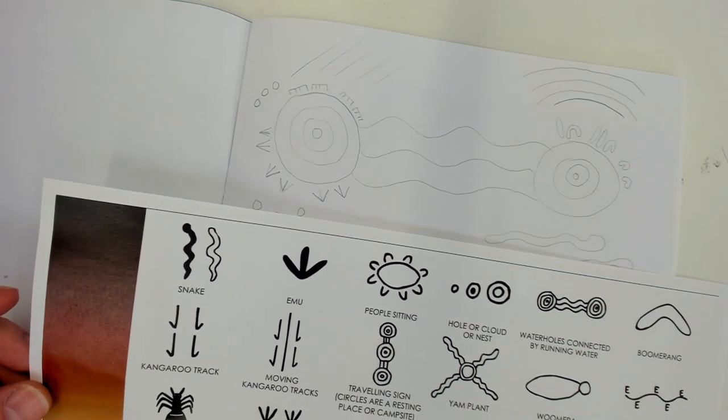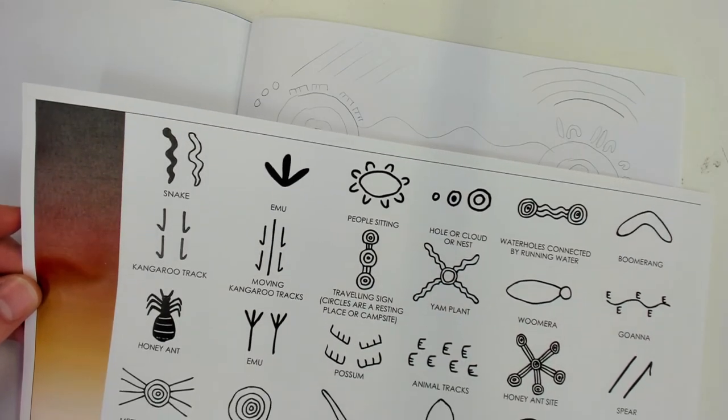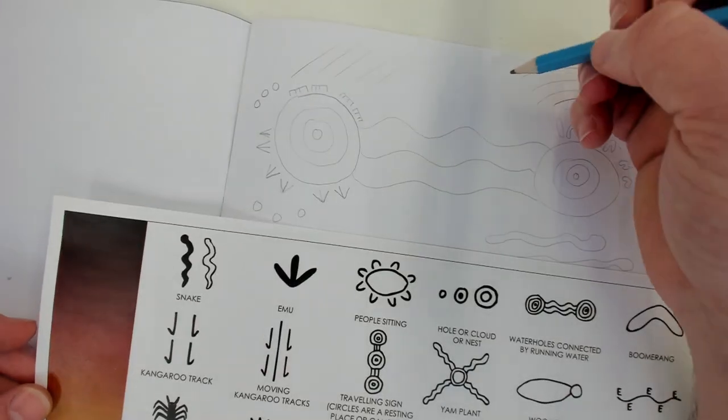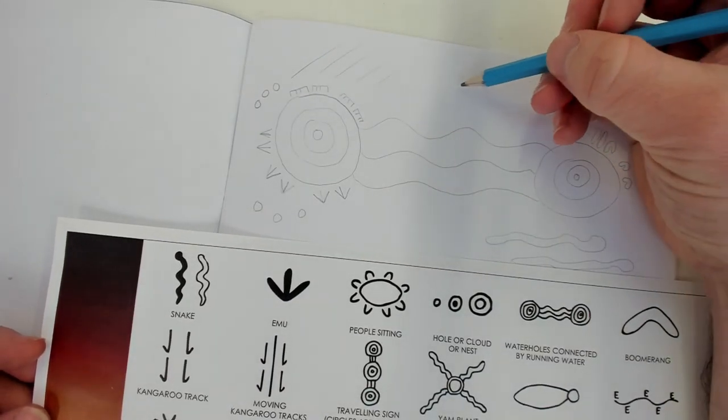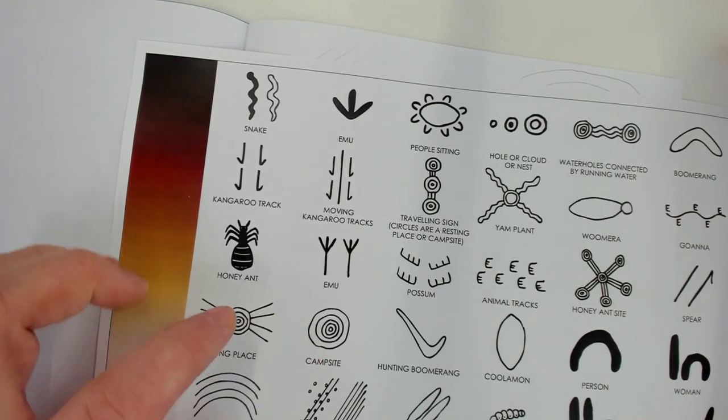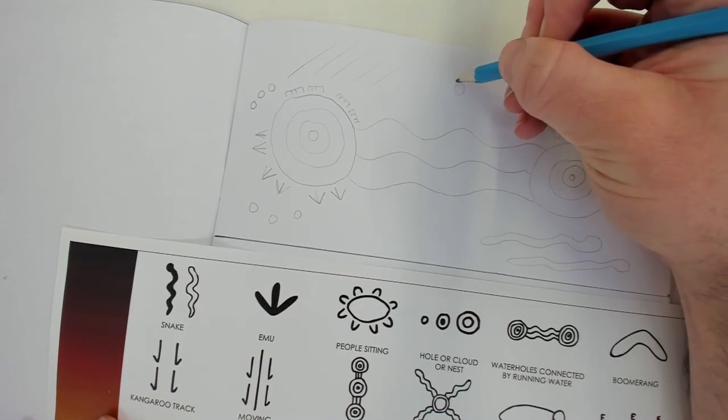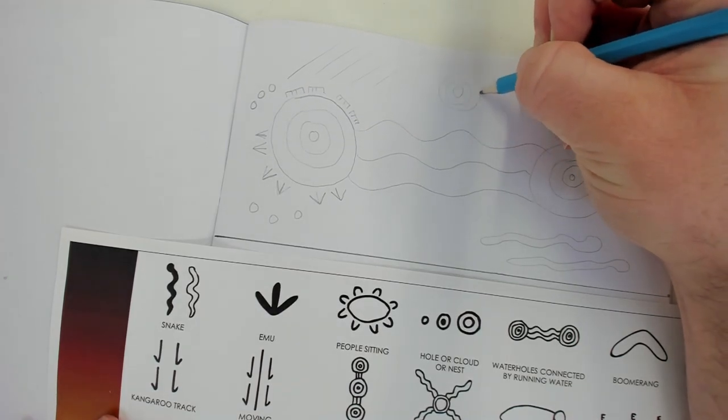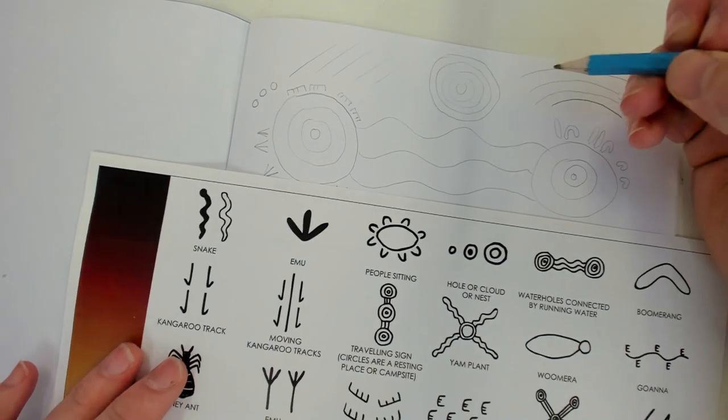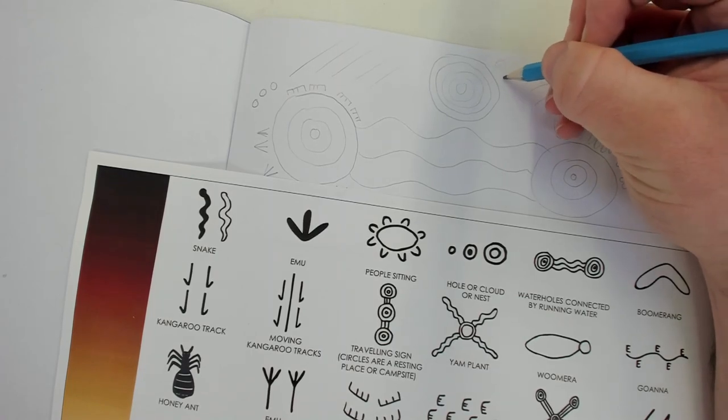Anything else to fill in those gaps? I think I might have a little campsite up here actually. A little campsite. Just a very similar to the water hole. So we have a campsite up there. Next to the running water. Maybe have a few people in and around the campsite as well.